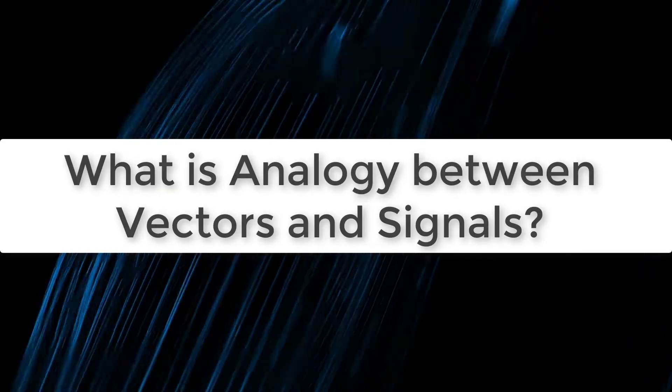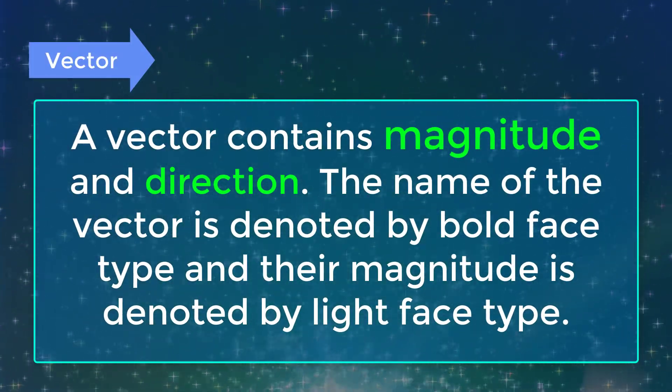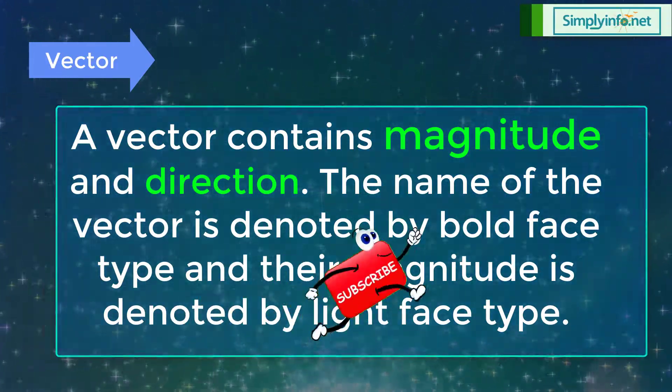What is the analogy between vectors and signals? A vector contains magnitude and direction. The name of the vector is denoted by bold face type and their magnitude is denoted by light face type.